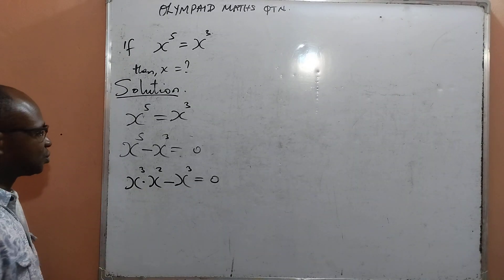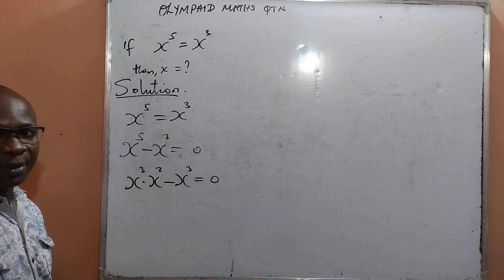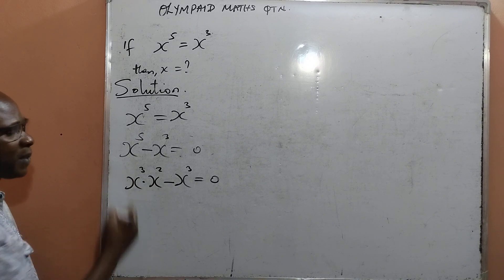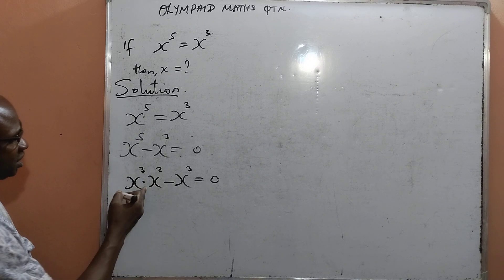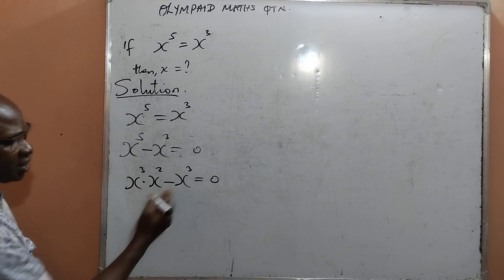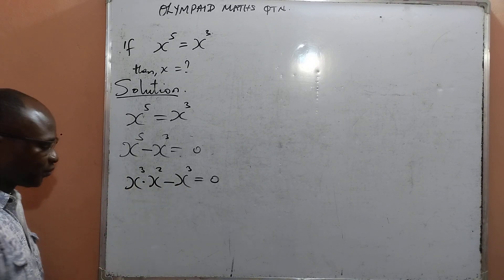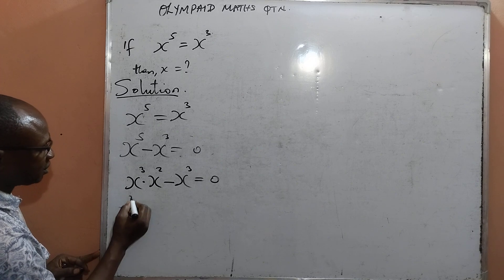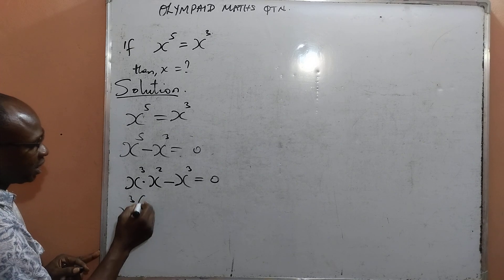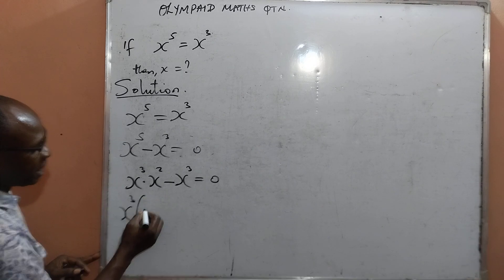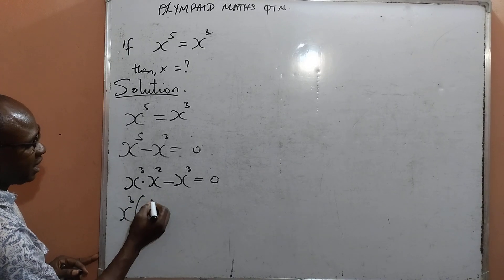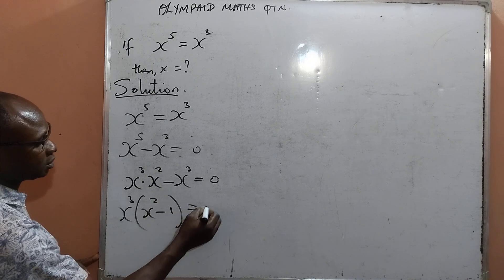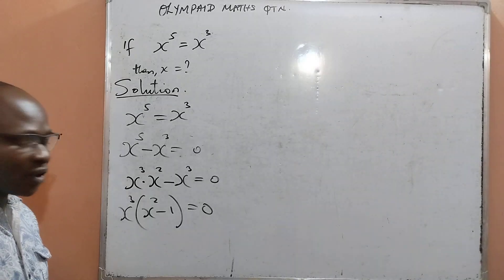I'll factor out what is common, and what is common is x raised to power 3, which appears in both terms. Therefore when it is factored out, inside the bracket I will have x raised to power 2 minus 1, equal to 0.